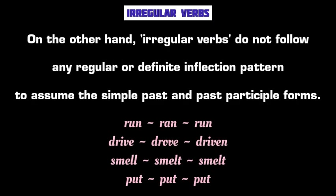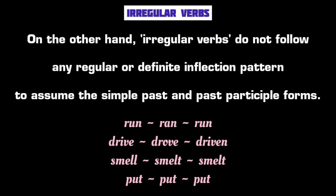However, most verbs in English do not follow any regular, standard, or predictable inflection pattern — most verbs do not follow the regular -d or -ed pattern of inflection. Such verbs are inflected in different ways for their simple past and past participle forms. That's why these verbs are known as irregular verbs in English grammar.